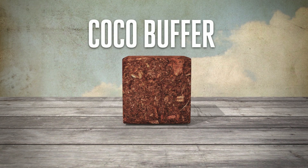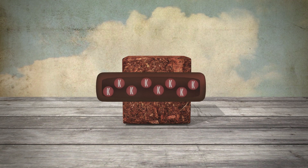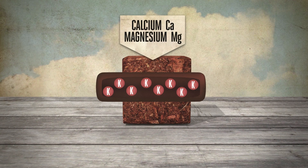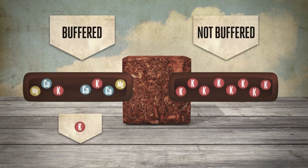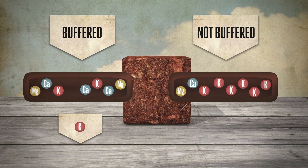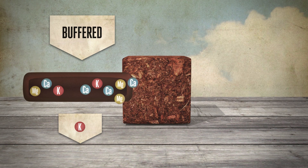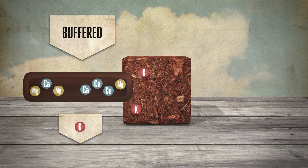Finally, we have the coco buffer. As mentioned, coco fibres also hold potassium. This needs to be removed by adding calcium and magnesium. If this does not happen, the fibre will draw calcium and magnesium out of the nutrient solution so that it is no longer available for the plant. Although the coco is buffered, it will always bind some calcium and magnesium from the nutrient solution and thereby release potassium. The coco substrate uses the potassium that is released for the generative phase as well. Since the coco substrate absorbs enough water and doesn't need to be watered that much, there is plenty of time for the coco to make this exchange.